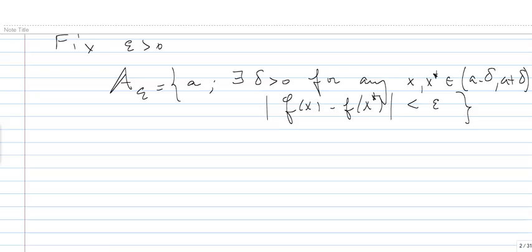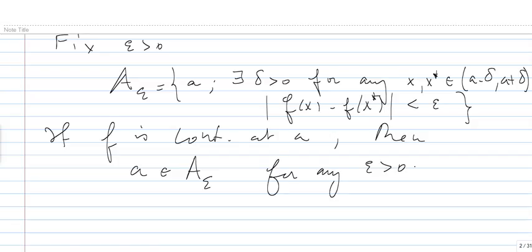Now, one may wonder why don't you take x star to be A, because we will have difficulty to prove that A_epsilon is a nice set. So what we have here is: if f is continuous at A, then A belongs to A_epsilon for any epsilon positive. And the converse is true as well.